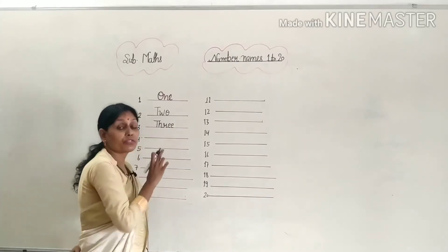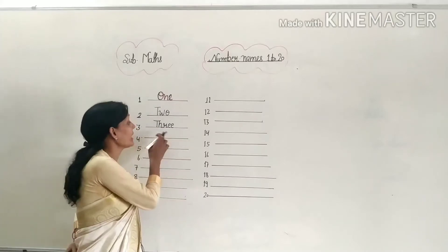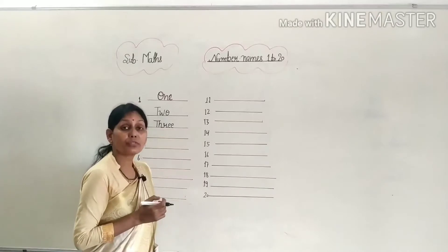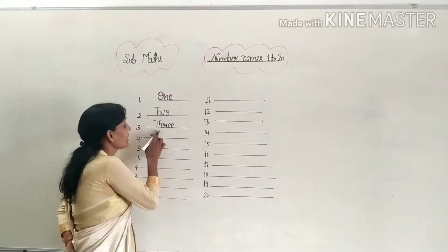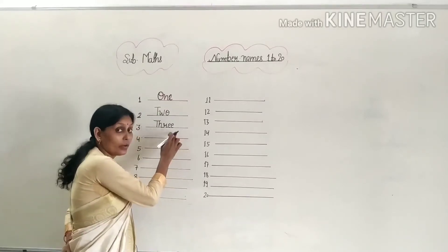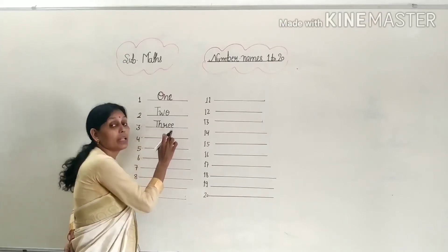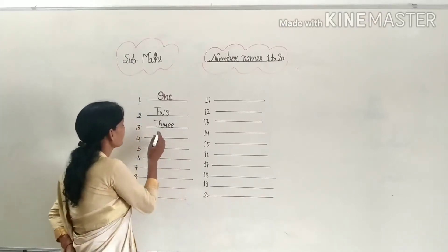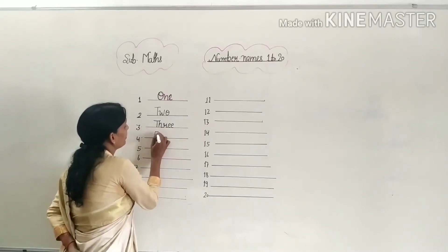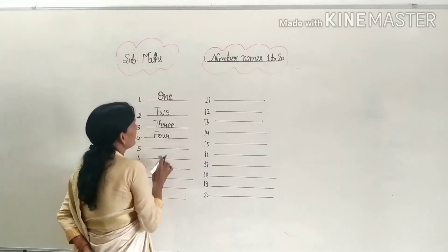What is the spelling of 3? Look at the board everyone. Look at the board and listen to my words carefully. What is the spelling of 3? T-H-R-E-E, 3. And 4: F-O-U-R, 4.